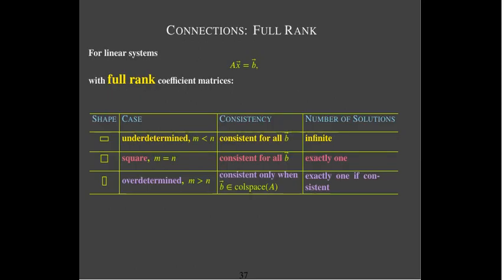We've seen this table before. It deals with full rank coefficient matrices, and we look at three cases of systems: underdetermined, square, and overdetermined. An underdetermined system has more variables than equations — think of it as a wide but short rectangular shape. If the coefficient matrix is full rank, that system is consistent for all B, and moreover you have infinitely many solutions.